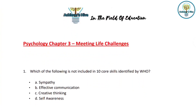Question 1: Which of the following is NOT included in the 10 core skills identified by WHO? Options: Sympathy, Effective Communication, Creative Thinking, and Self-Awareness. The correct answer is option A — Sympathy. WHO has not identified Sympathy in the 10 core skills. Sympathy is an emotional component but is not part of the 10 core life skills identified by WHO.